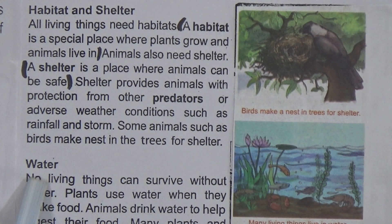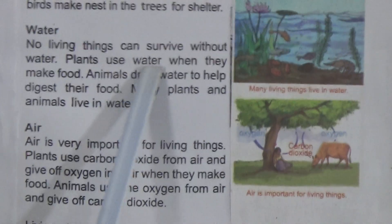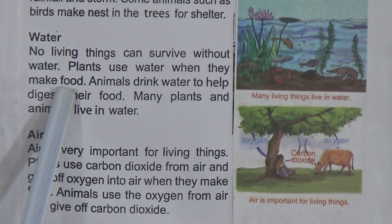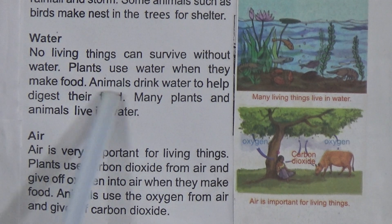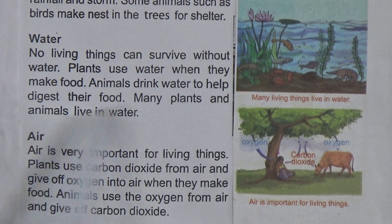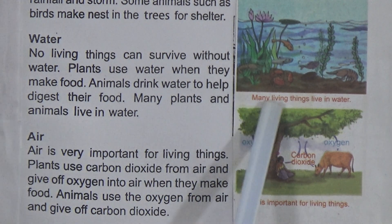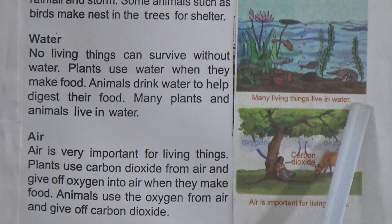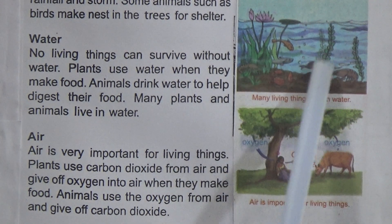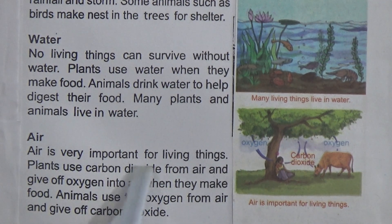Next point is water. No living things can survive without water. Plants use water when they make food. Animals drink water to help digest their food. Many plants and animals also live in water. You can see in this picture there are many living things in water — fish and some plants.